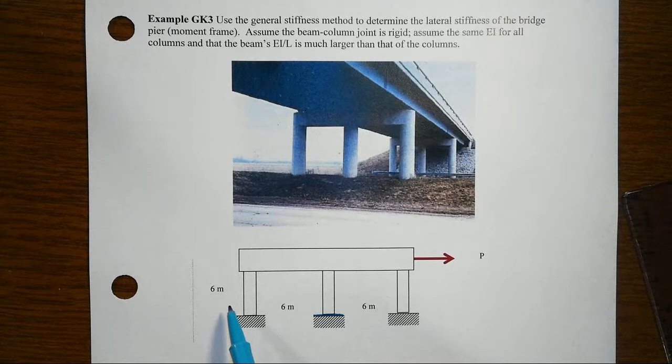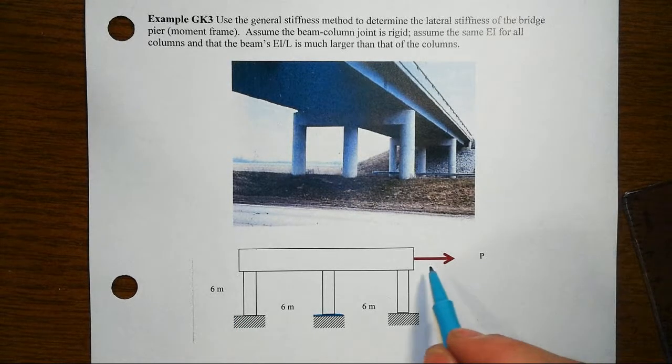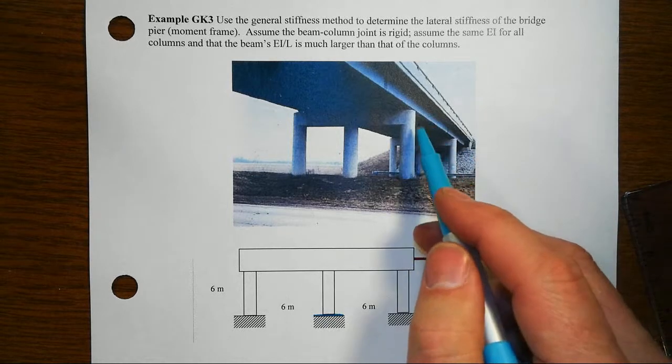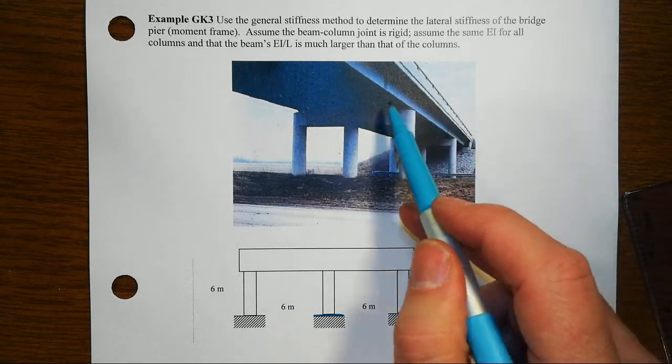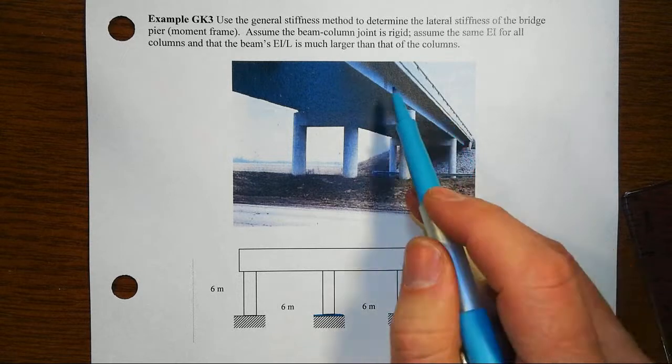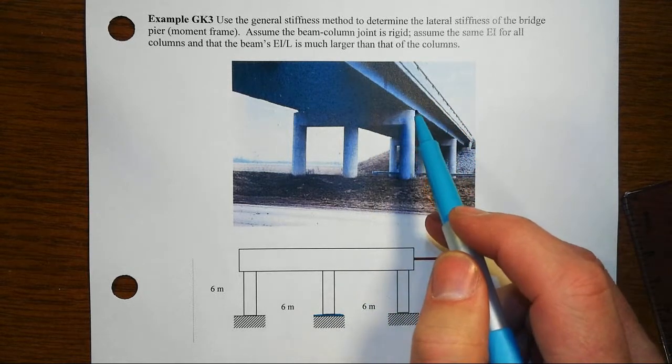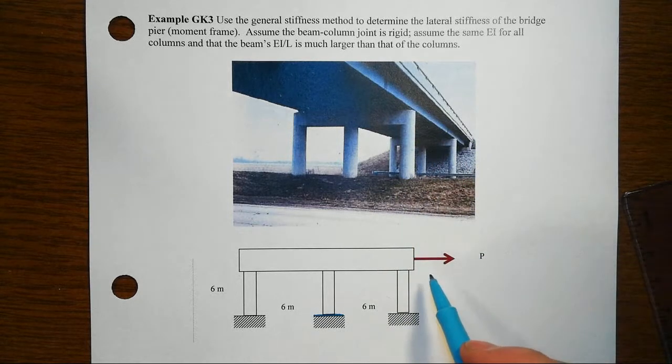So six meters, six meters in between, and six meters high. We have this lateral load that we're interested in. Now you might look at this and say, why are we looking at lateral loads? Obviously trucks and other vehicles go across the bridge and that would be a gravity loading acting downwards. So why are you looking at this lateral stiffness?